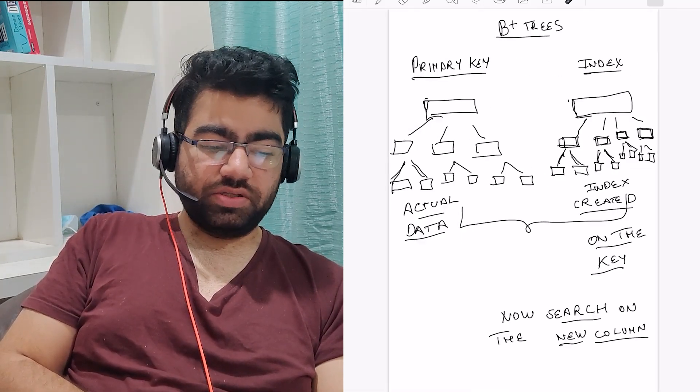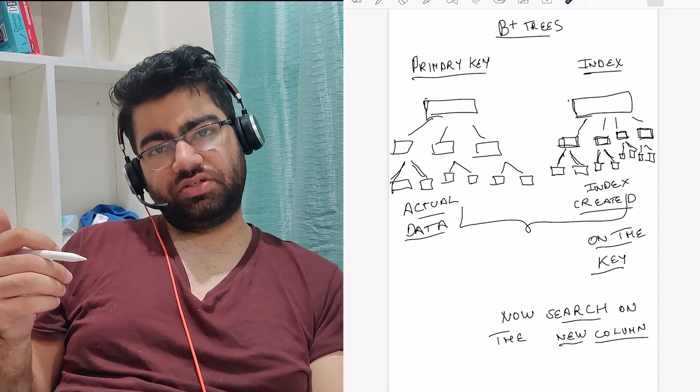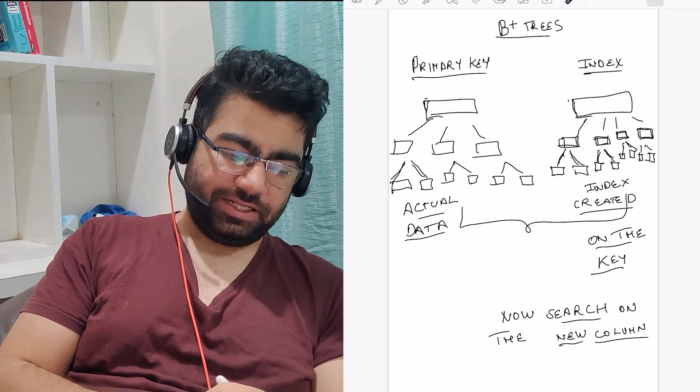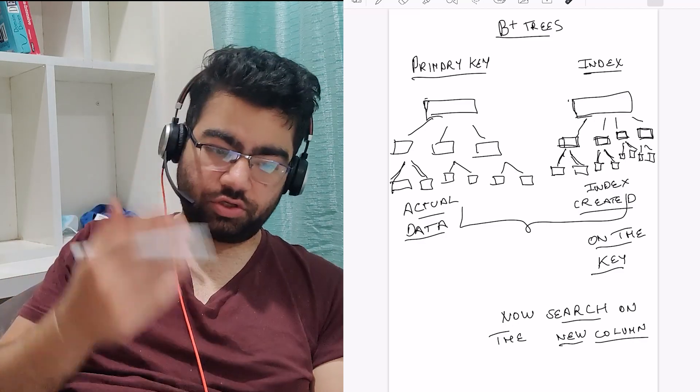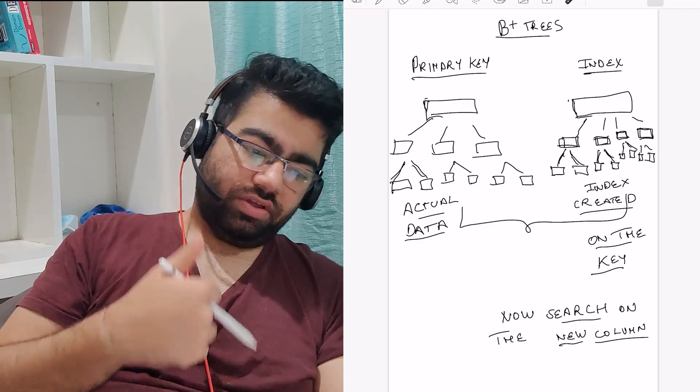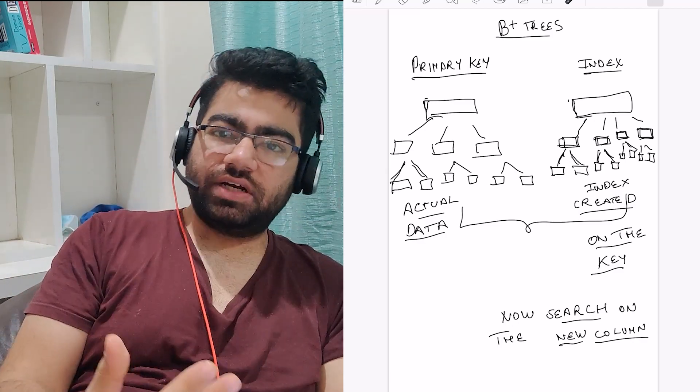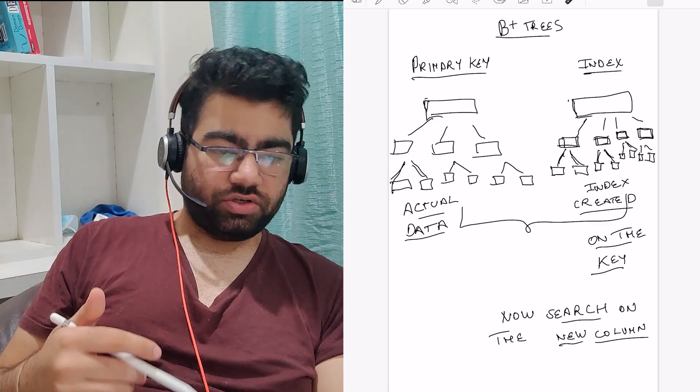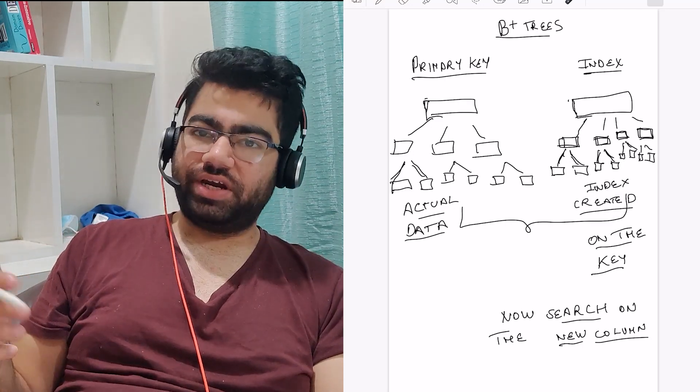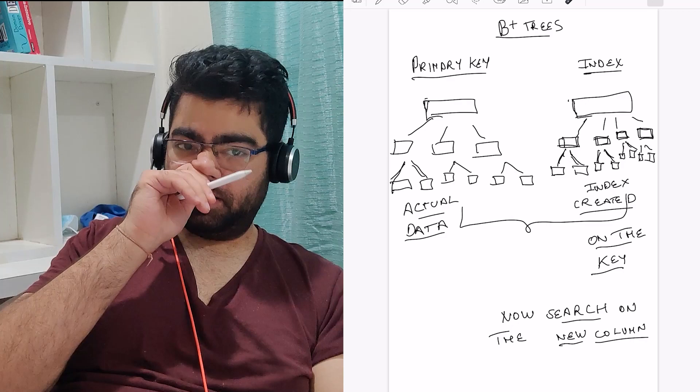That's what happens in an index when you create. Most of the NoSQL databases also follow a B+ tree structure internally, and the indexes which are created in them are also created in such a way only.